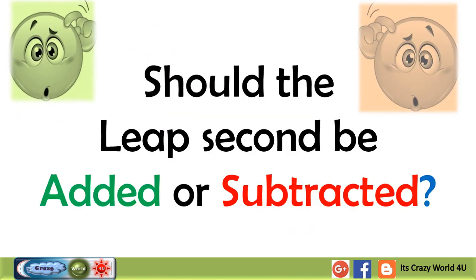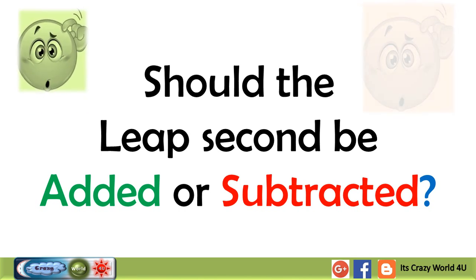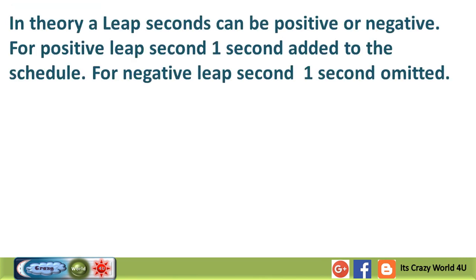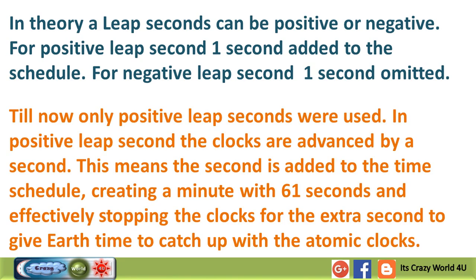Should the leap second be added or subtracted? In theory, leap seconds can be positive or negative. For a positive leap second, one second is added to the schedule. For a negative leap second, one second is omitted. Till now, only positive leap seconds have been used. In a positive leap second, the clocks are advanced by a second, creating a minute with 61 seconds and effectively stopping the clocks for the extra second to give Earth time to catch up with the atomic clocks.